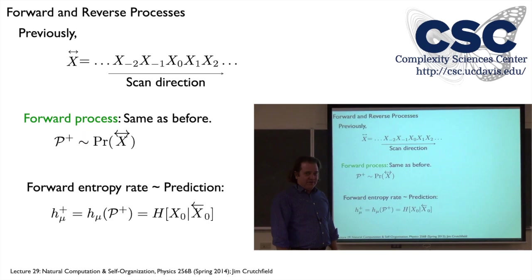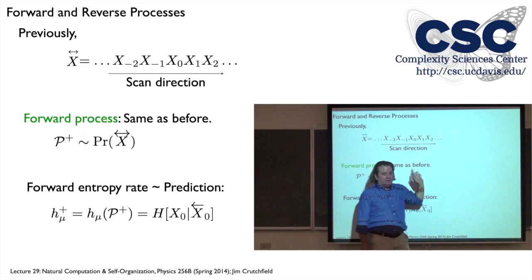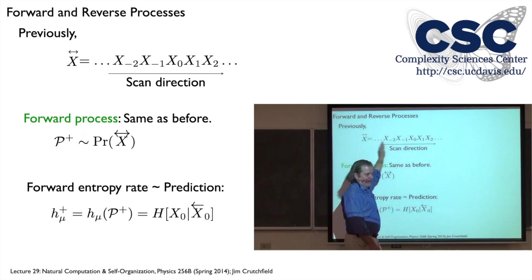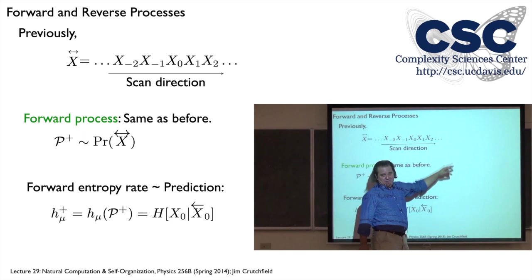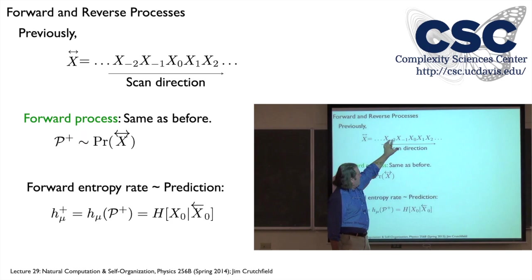We're going to recast what we've been doing — basically add little plus signs so we can keep track of the choice of scan direction. What we've been doing implicitly is writing down an index on the random variables and assuming that was time, with the index increasing by one each time we advanced. Now we're going to call this the forward process, written as calligraphic P-plus, distributed according to the joint distribution over this scan direction.